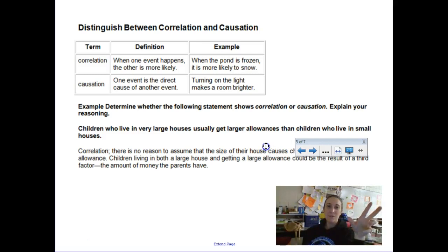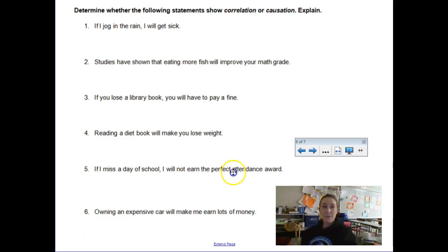We're going to determine whether things are causation or correlation. Children who live in very large houses usually get larger allowances than children who live in small houses. They're saying this is a correlation. If you looked at the data, you might find that children who live in larger houses get larger allowances. So as a scientist you think, what's the reason for that? If a parent makes more money, they're more likely to give trickle down to the children, give them a larger allowance. If a parent lives in a smaller house, maybe that's because they don't have a lot of extra money and they can't afford to give them extra allowance.